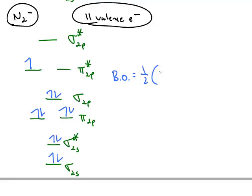We still have 8 electrons in bonding MOs, but now we have an extra electron and it's in an anti-bonding MO. So this time we get a bond order of one-half of 5 or 2 and a half.